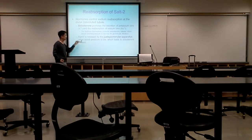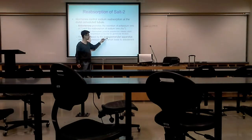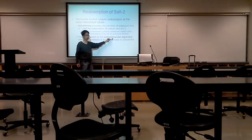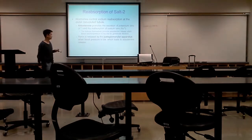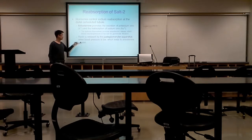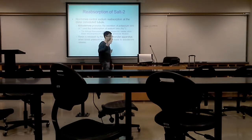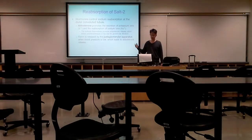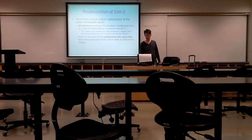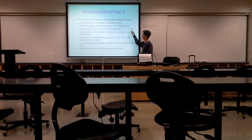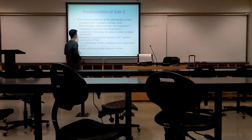In the kidney there is a structure called the juxtaglomerular apparatus — meaning 'next to the glomerulus.' The juxtaglomerular apparatus secretes renin when it detects low blood pressure. Renin then triggers a cascade leading to aldosterone release. This is called the RAA pathway — Renin, Angiotensin, and Aldosterone pathway.